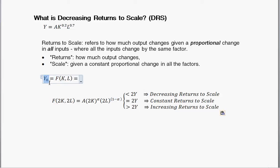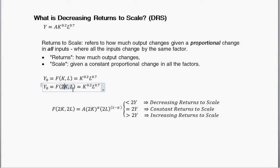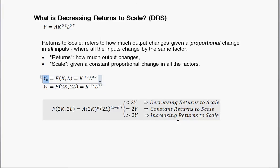If you think of the initial level of output as Y-sub-0, where the production function given some inputs gives some level of output — the question is, if we were to double the inputs, does that double the output? Is Y1 going to be double the initial level, less than double, or more than double? If the new level of output, given that we've doubled the inputs, is exactly equal to double the initial, then we'd say that's constant returns to scale.